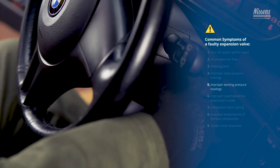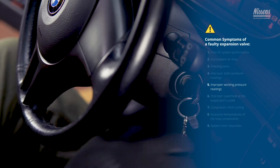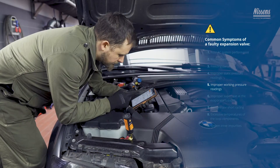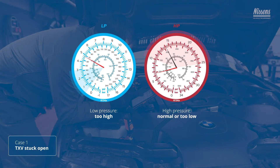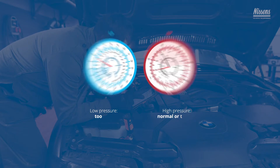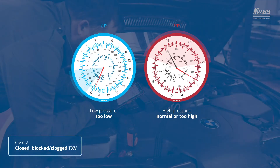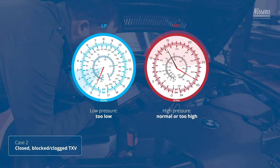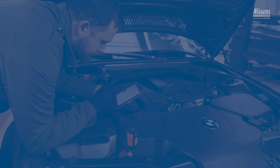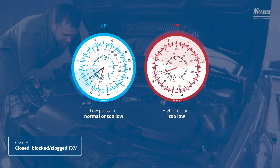Improper working pressure readings: depending on the system's design, too high or too low working pressure readings may be a sign of expansion valve malfunction. Normal gauge readings should be between 2 and 3 bar on the LP side and 14 to 24 bar on the HP side.